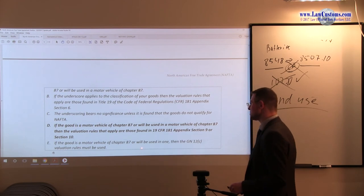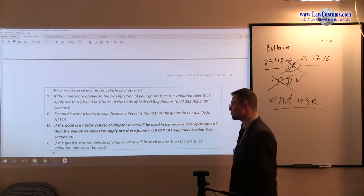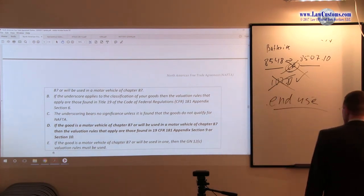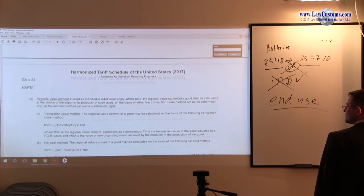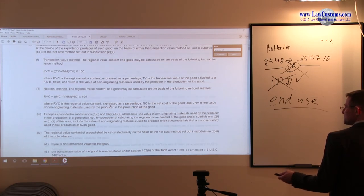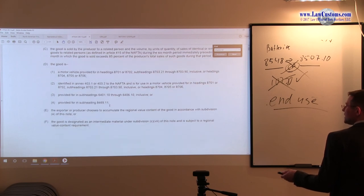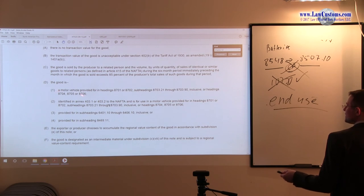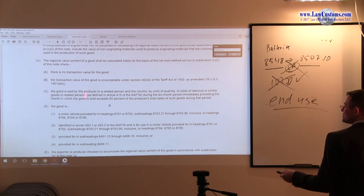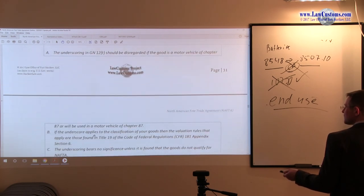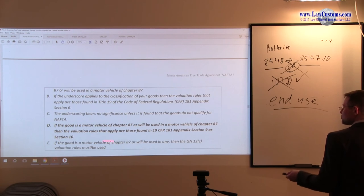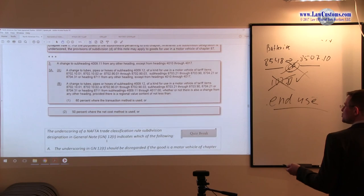E. If the good is a motor vehicle of Chapter 87, or will be used in the one, then General Note 12c valuation rules must be used. Well, General Note 12c valuation is those valuations which prescribe what type of valuation method you should use. Right. So you have transaction, you have net cost, and we will be talking about that in more detail in the next class. Yes, you have a specific provision. You say the original value concept must be used where the good is motor vehicle, right? But look at the color of the question. The underscoring, right?